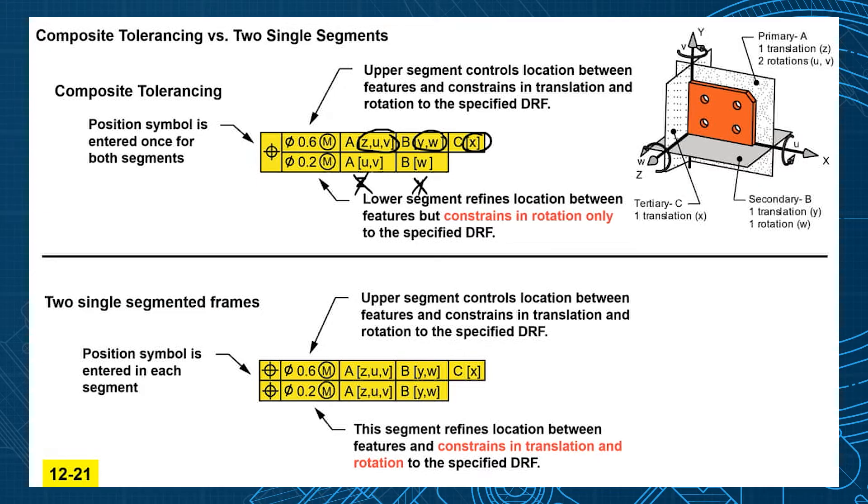So it's only constraining you in the UV and the W when you add them in the lower frame. So it's location between the features but rotation orientation only.